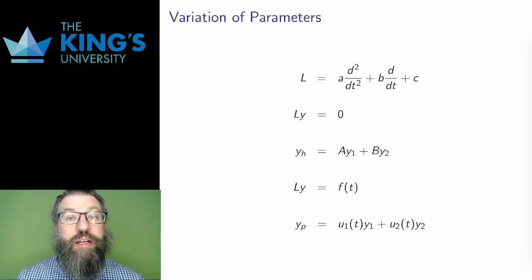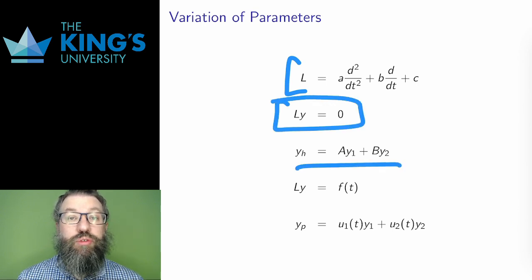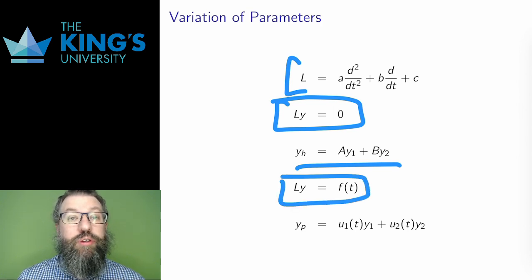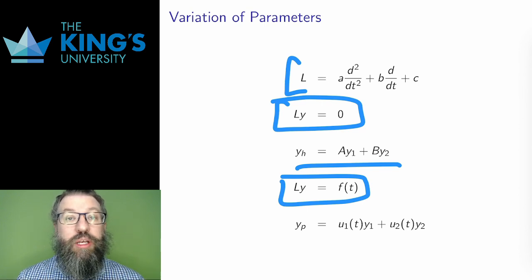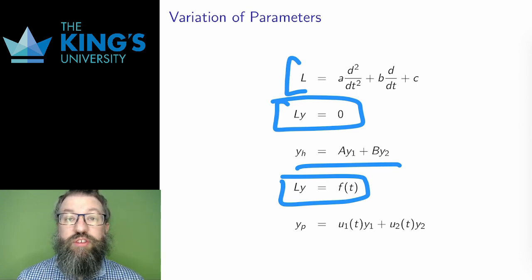Let me recall the general setup for these equations. I have a linear operator and a homogeneous equation. There are two linearly independent homogeneous solutions, y1 and y2. And then I can add a forcing term. Two videos ago, I introduced undetermined coefficients to find the particular solution. That was a really good method, but it only works for certain kinds of functions. For anything that is not a combination of exponentials, trig, and polynomials, undetermined coefficients doesn't help. I want a more general method.